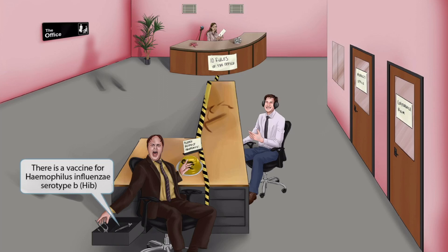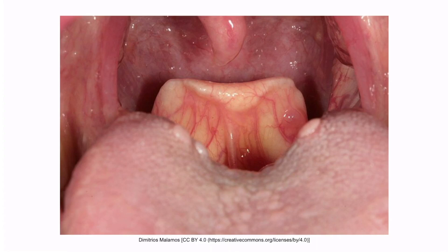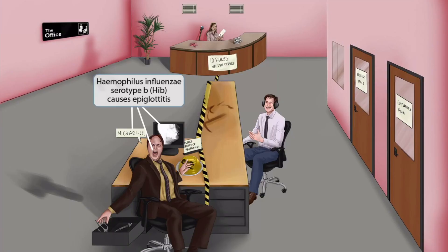Let's talk about some of the diseases caused by the type B strain of H. flu. First, it causes epiglottitis. The epiglottis is a cartilaginous structure just behind the tongue, which is depressed when you swallow and covers up the top part of the trachea to prevent food from being aspirated. If it becomes inflamed, it can obstruct the airway, resulting in asphyxiation — so it's a medical emergency. To help you remember that HIB causes epiglottitis, we've shown Dwayne opening his mouth widely and yelling 'Michael!' You'll also notice an x-ray of epiglottitis on Dwayne's computer screen, since this content is to the left of the tape, representing the typable strain HIB.